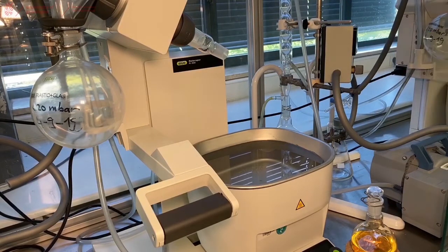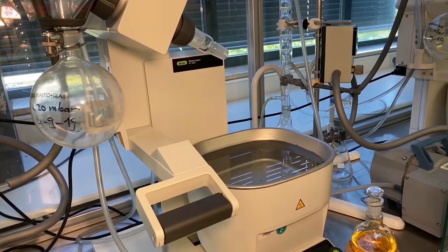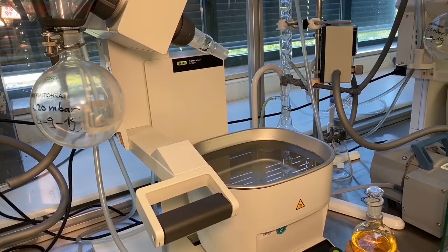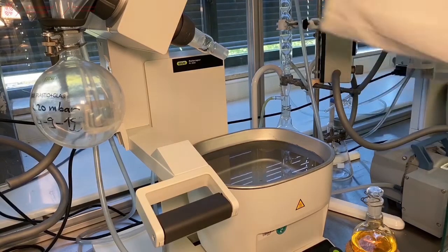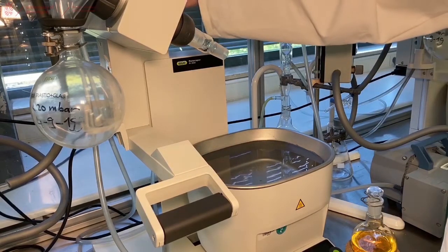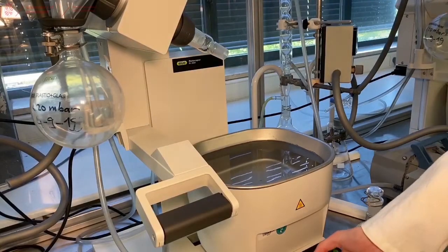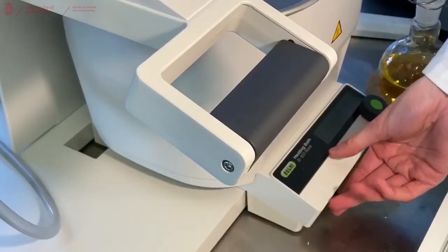Now that the water is on, we have to turn on the Rotary Evaporator. Most of them have multiple on buttons that you can find either on the top or at the bottom of the Rotary Evaporator. This one has one on the top and there is the on button for the water bath at the bottom.